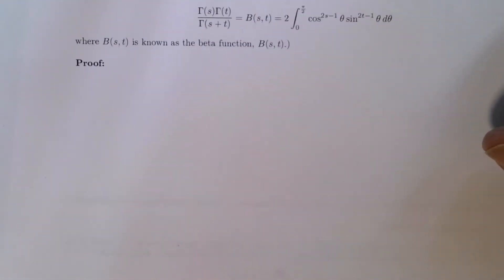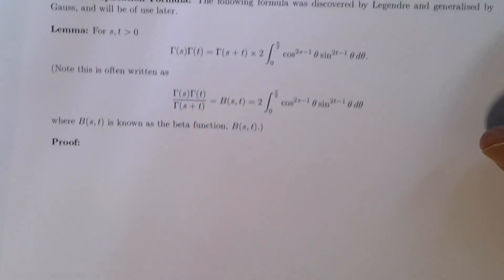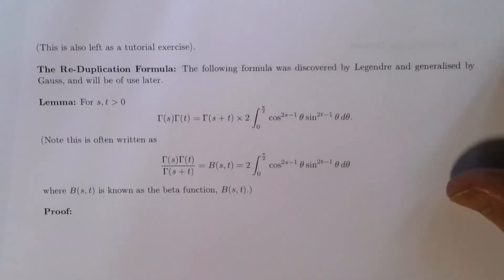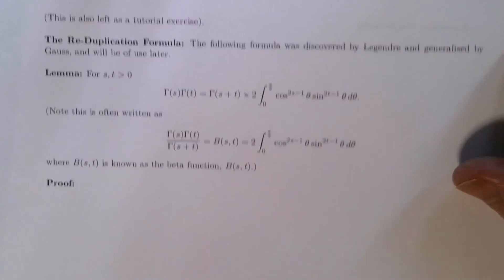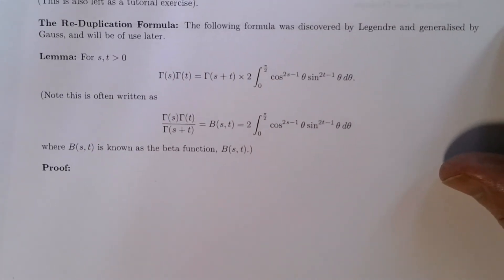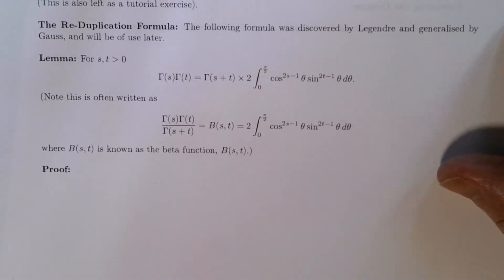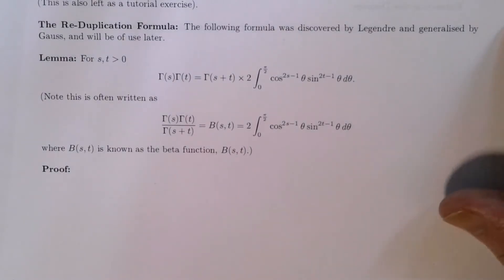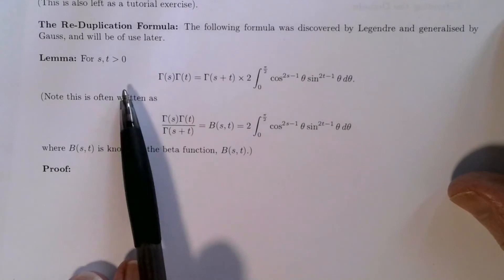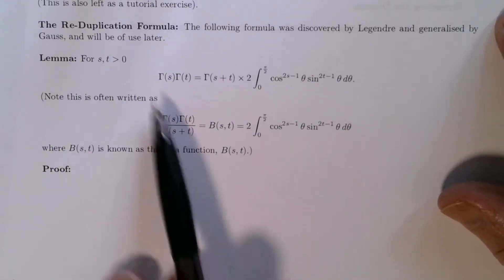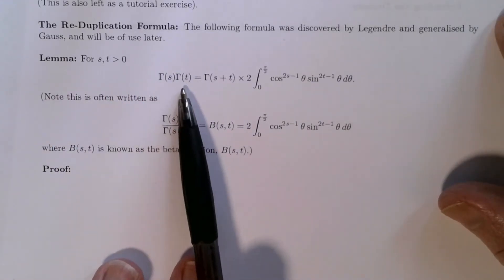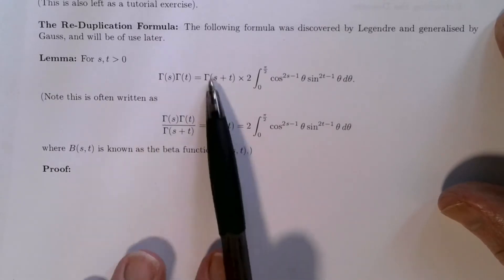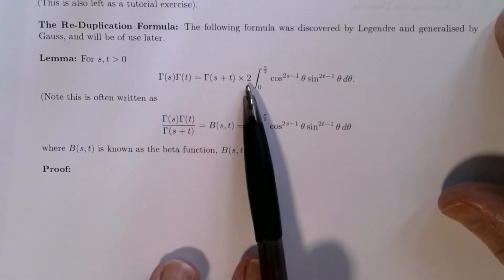I want to now introduce the so-called reduplication theorem, which goes back to Legendre and was generalised by Gauss. This is going to be of great use to us later in our quest to extend the zeta function across the whole complex plane. The reduplication formula tells us how to multiply gamma of s and gamma of t, and says it equals gamma of the sum of the two multiplied by twice this integral.